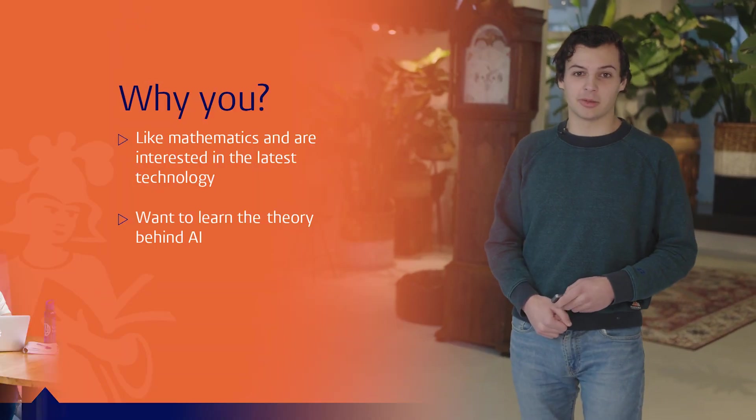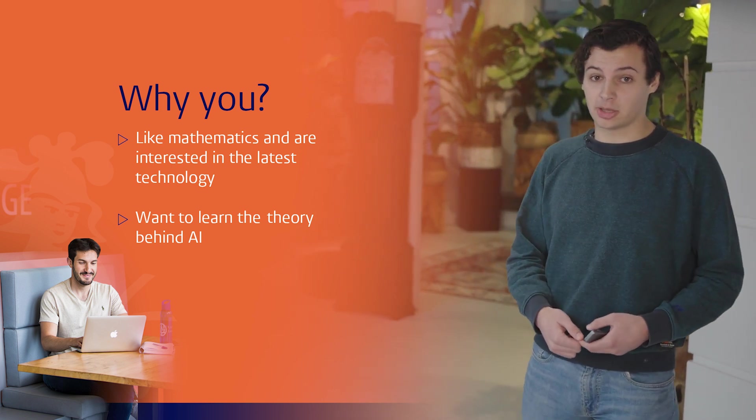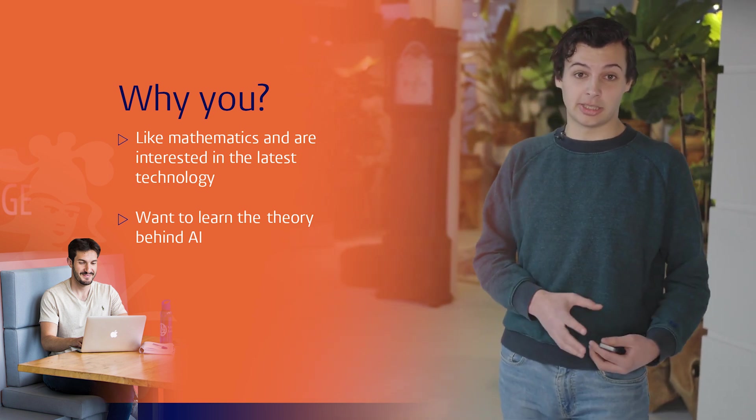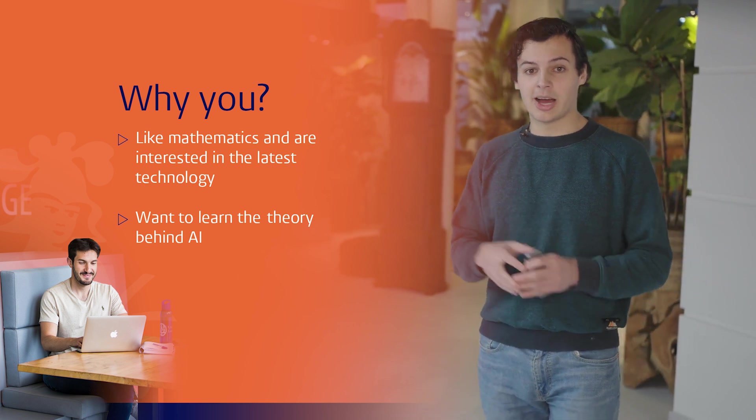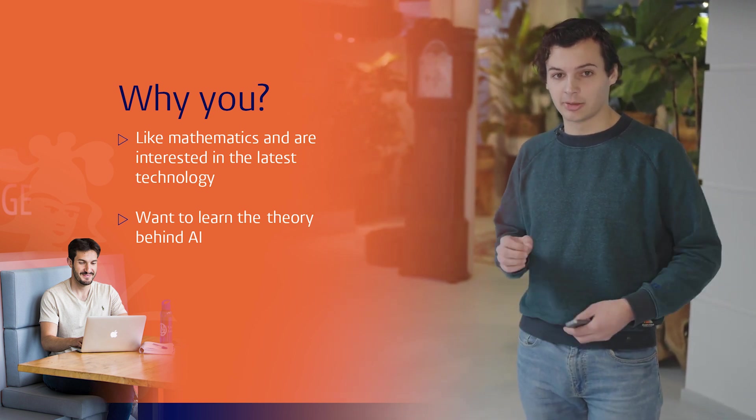Is this the right program for you? If you want to study this bachelor there are two things to keep in mind. The first is that you actually like mathematics — it doesn't have to be your favorite subject but you should have at least some interest in it. Also you should be interested in the latest technology, which is very much AI related. And you need to want to learn the theory behind AI — not only how to apply it to real life problems but actually knowing why it works the way it does. You have to find that interesting.